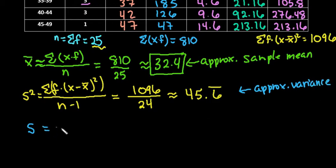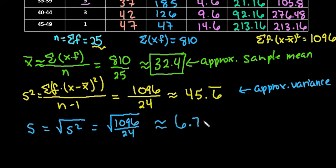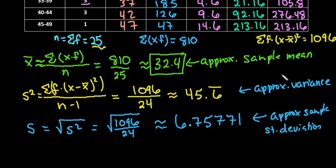And to find the standard deviation, s is found by doing the square root of s squared. So we would just take the square root of 1096 divided by 24, which gives us approximately 6.75771, which is what I started writing on the last one. So this would be the approximate sample standard deviation. And up here, this would be the sample variance.